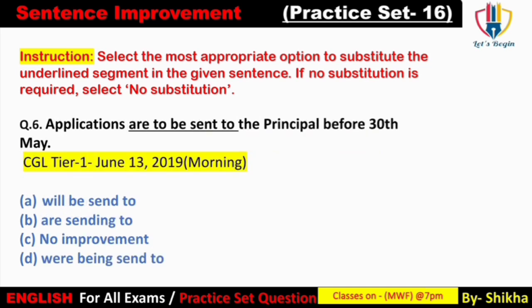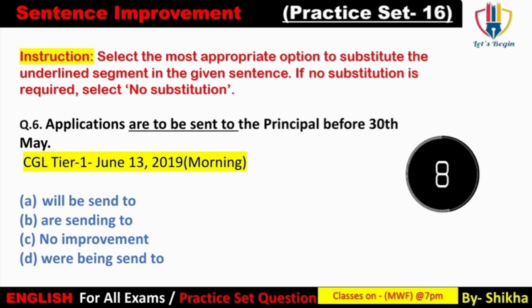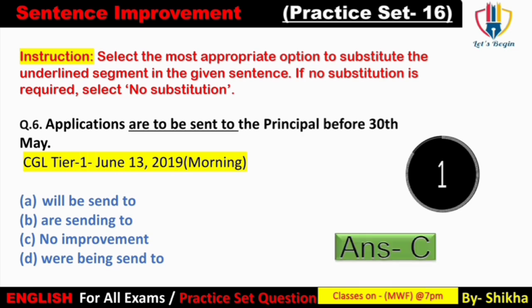Next: 'Applications are to be sent to the principal before 30th.' Yeh sentence passive form mein banna chahiye aur sentence diya gaya hai passive form mein. Option A mein 'will be' ke saath verb 3 aana chahiye — 'will be sent' hona chahiye, isi liye option A galat hai. Option B 'are sending to' — yeh active form mein hai, galat. Option D mein 'war being send' — 'sent' hona chahiye, galat. Answer: option C — No improvement. 'Applications are to be sent to the principal before 30th' — application principal ko send ki jani hai 30th se pahle.